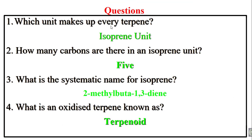Here is a summary question: Which units make up every terpene? The isoprene unit. Isoprene is a major constituent and building block for all terpenes. How many carbons are there in an isoprene unit? It consists of five carbon atoms.